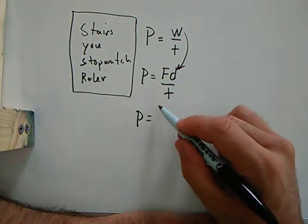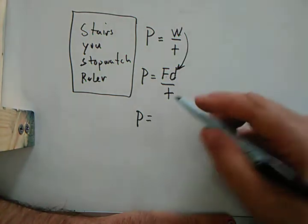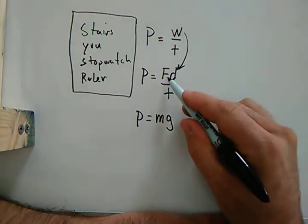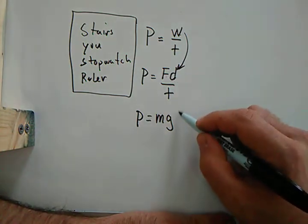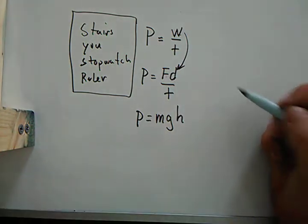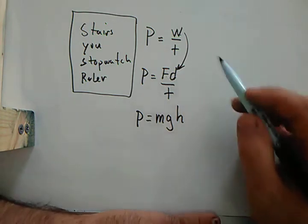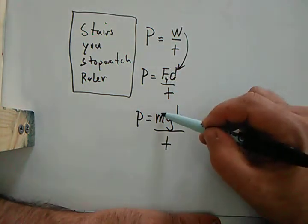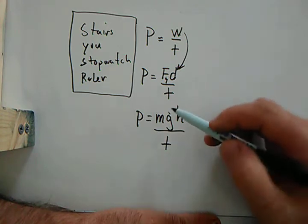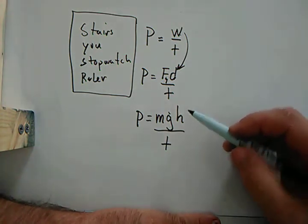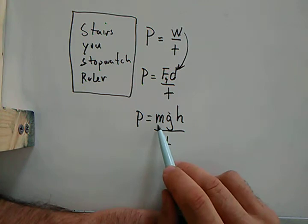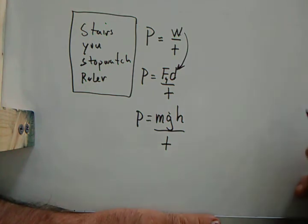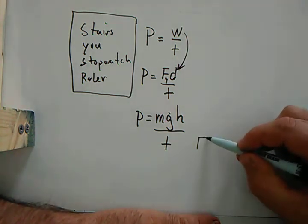Well, force you're going to be measuring is the force of gravity. So force of gravity is mass times gravity. Distance is height. Hey, wait a minute, this almost looks like potential energy. So look, the force of gravity is mass times gravity, height is a distance because you're going to be climbing some stairs. So look, power is potential energy over time, really.